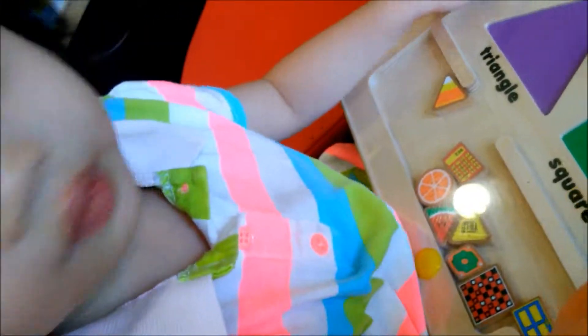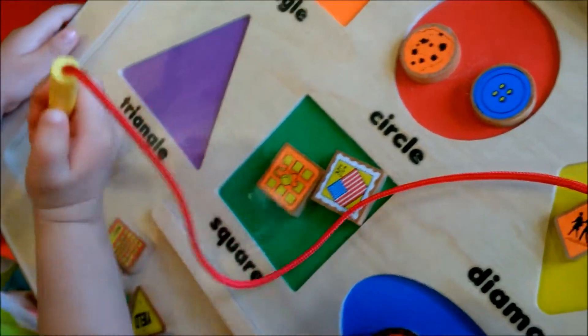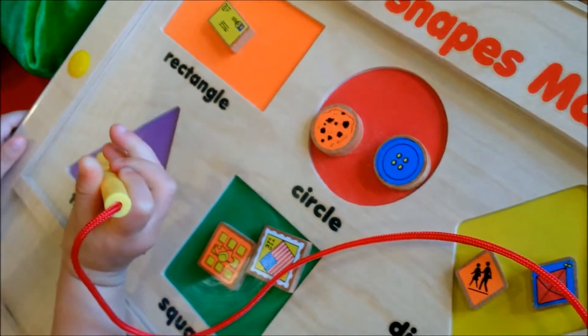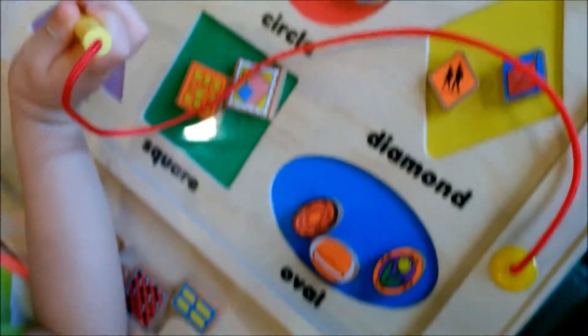So learning all the different shapes. So what's this one? You got triangle, rectangle, circle, diamond, square, and oval.